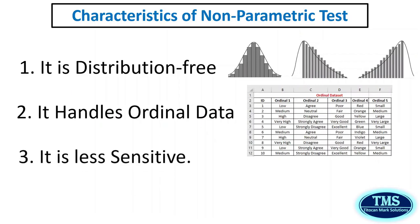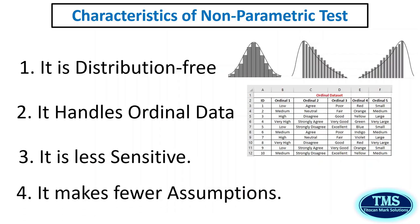Third, it is, however, less sensitive. Non-parametric tests are generally less powerful — that is, less likely to detect an effect if it exists — compared to their parametric alternatives, especially when the assumptions of parametric tests are met. Fourth, it makes fewer assumptions about the data distribution and can be applied to ordinal, interval, and ratio data.